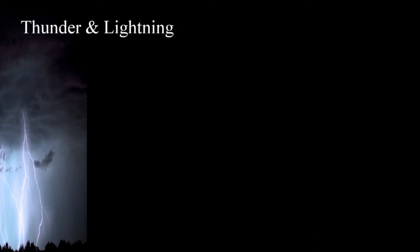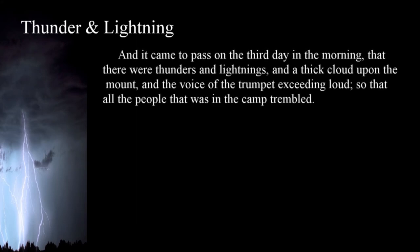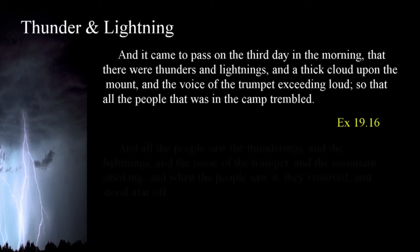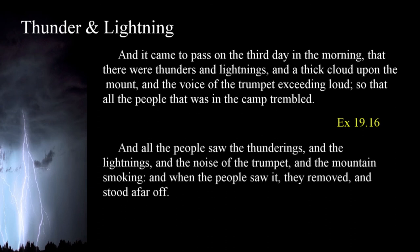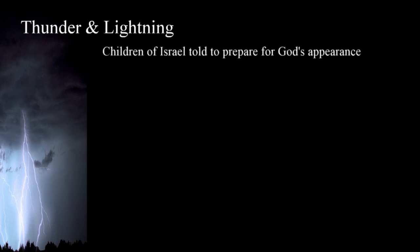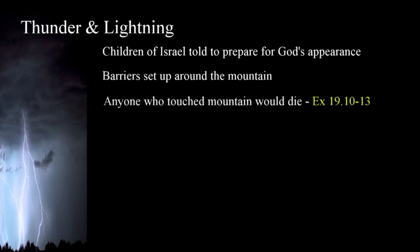When God appeared at Mount Sinai, we have a powerful description of what was seen as the Lord descended on the mountain: 'It came to pass on the third day in the morning that there were thunders and lightnings and a thick cloud upon the mount and the voice of the trumpet exceeding loud, so that all the people that was in the camp trembled' — Exodus 19:16. And: 'All the people saw the thunderings and the lightnings and the noise of the trumpet and the mountain smoking, and when the people saw it, they removed and stood far off' — Exodus 20:18. The children of Israel had been told to prepare for the Lord's appearance. Barriers were set up around the mountain, and anyone who came in contact with it would die — Exodus 19:10-13.